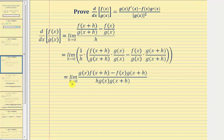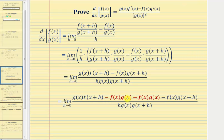We now have the limit as h approaches zero where, looking at the denominator, we have a factor of h, a factor of g(x), and a factor of g(x+h). In the numerator, we reorder the product and write g(x) times f(x+h) minus f(x) times g(x+h). Next, we add and subtract the same term in the numerator — subtracting f(x)g(x) and then adding f(x)g(x) — so this sum is zero and the fraction is equivalent, just in a different form.